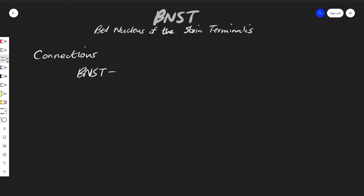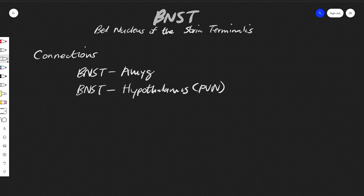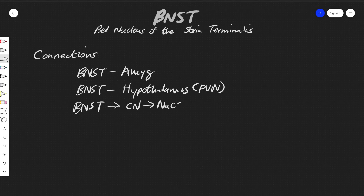For connections: the BNST is connected to the amygdala, as seen in the picture, through the stria terminalis. The BNST is also connected to the hypothalamus, particularly the paraventricular nucleus. Additionally, the BNST connects to the caudate nucleus, the nucleus accumbens, and the orbitofrontal cortex.